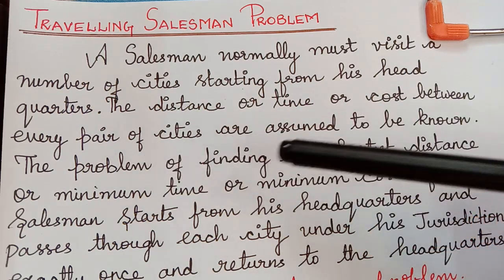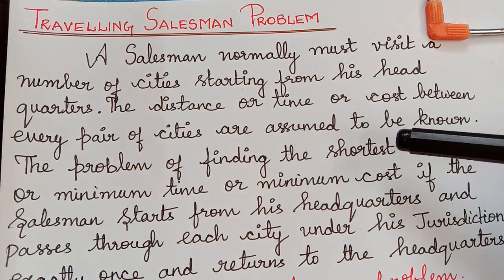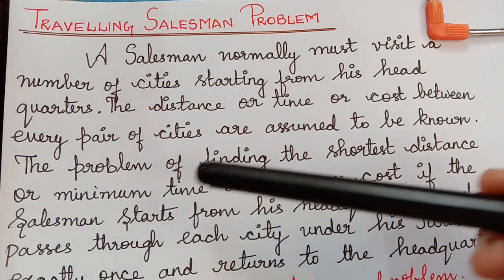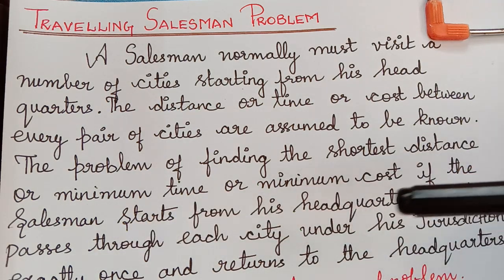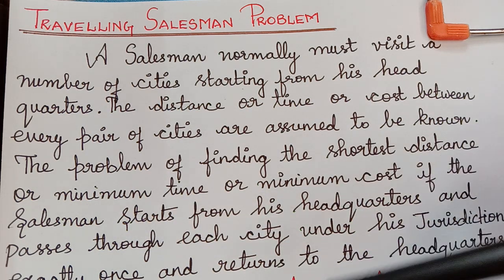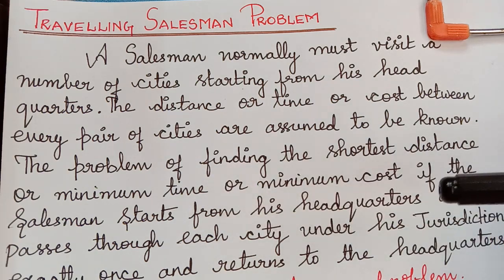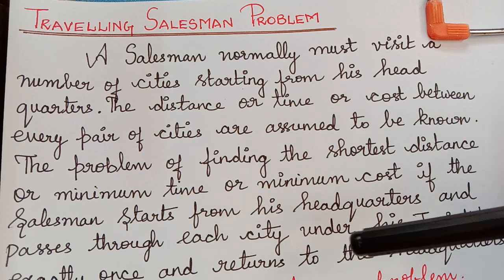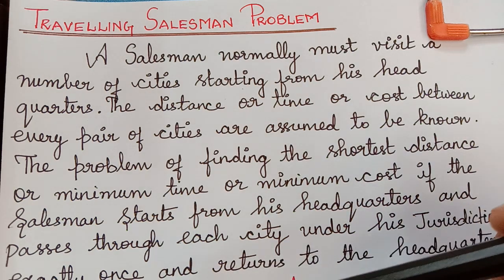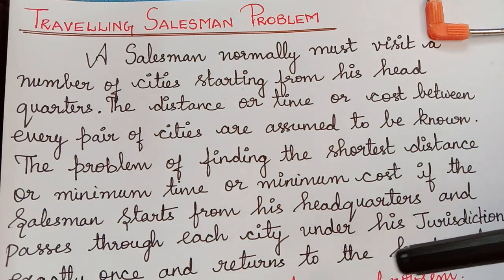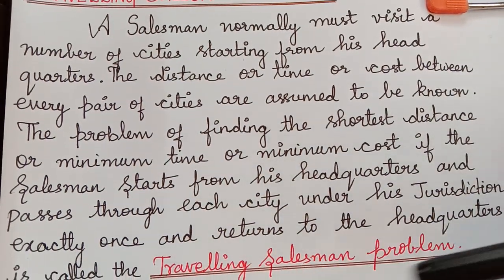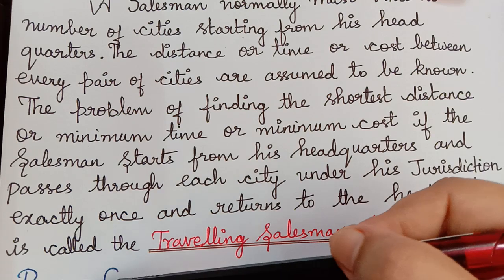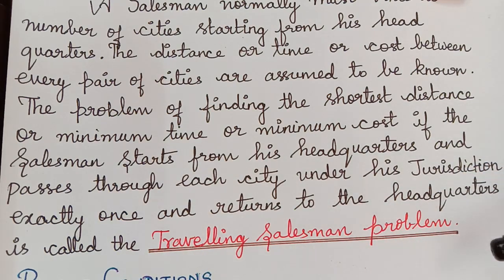The distance or time or cost between every pair of cities are assumed to be known. The problem of finding the shortest distance or the minimum time or minimum cost if the salesman starts from his headquarters and passes through each city under his jurisdiction exactly once and returns to the headquarters is called the traveling salesman problem.